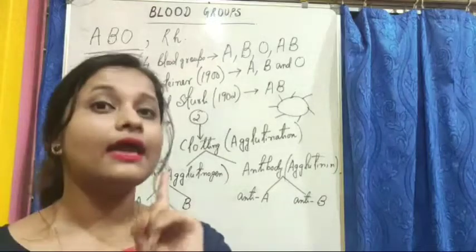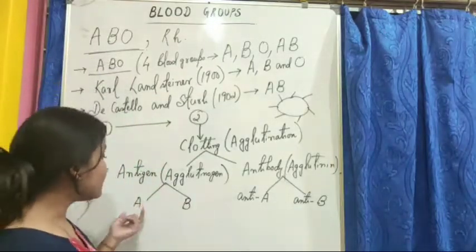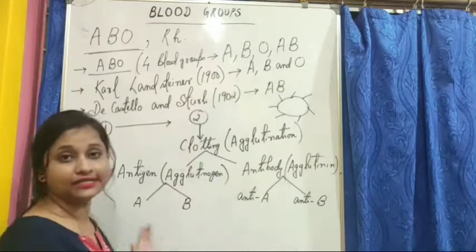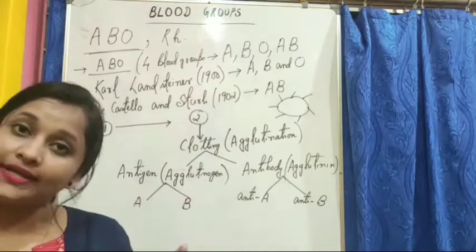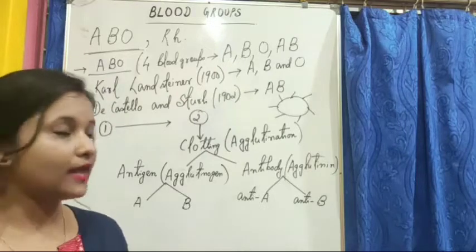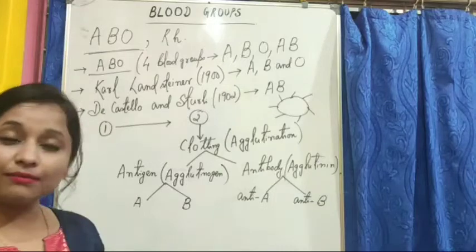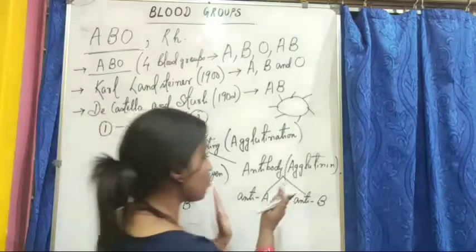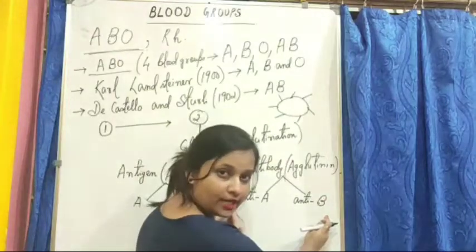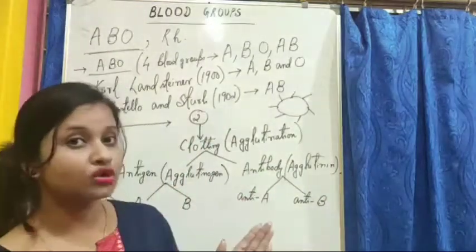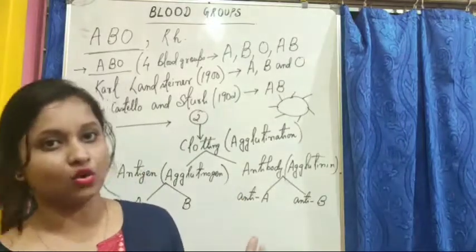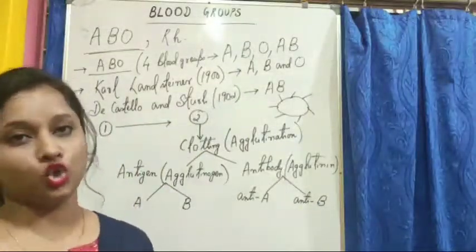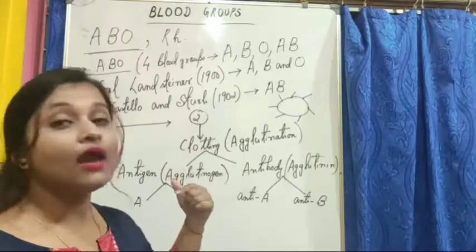A single person can have either antigen A, or antigen B, or both antigens, or no antigen at all. Based upon the presence of antigen and antibody, there are four blood groups: A, B, O, and AB.